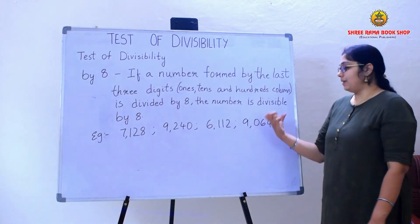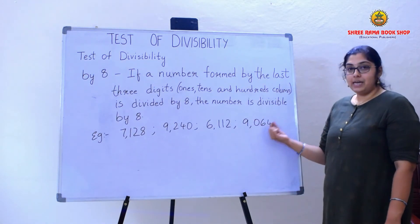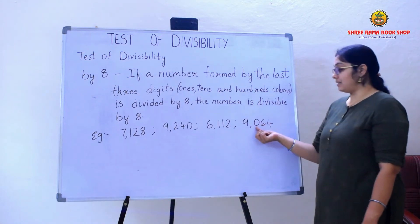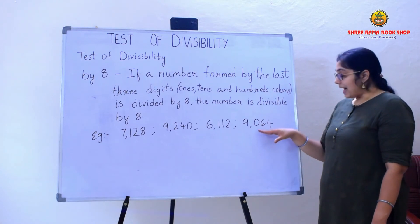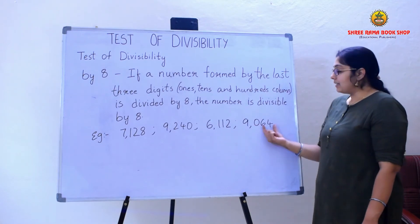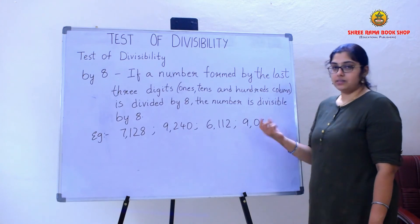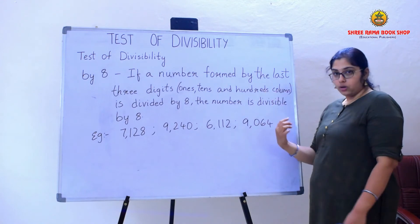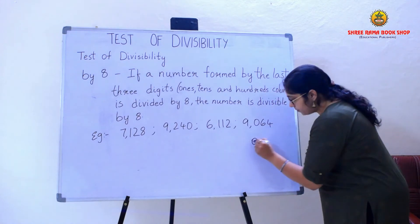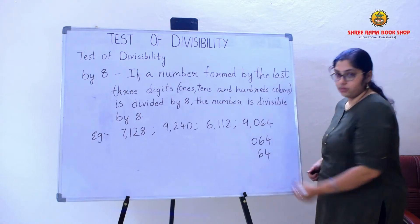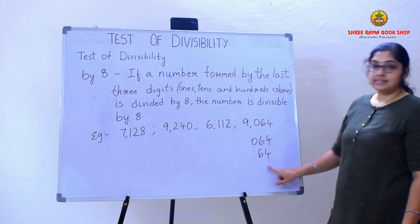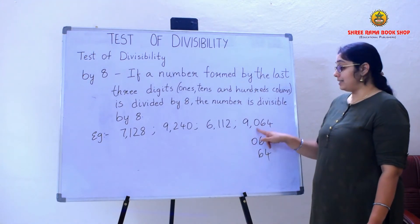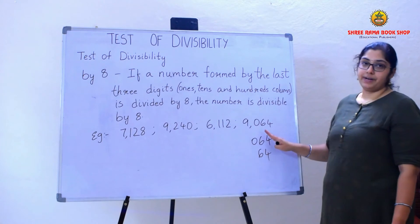In the next example, I have 9064. The last three digits are 064. As the 100's digit is 0 and has no value, I can consider just 64. So 064 is nothing but 64. Since 64 is divided by 8, the whole number 9064 is also divisible by 8.